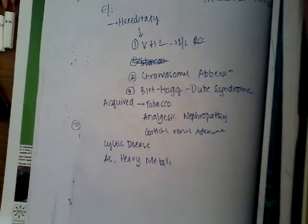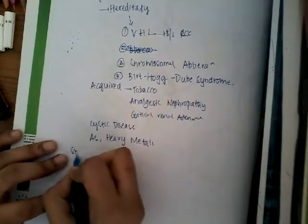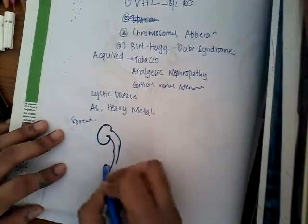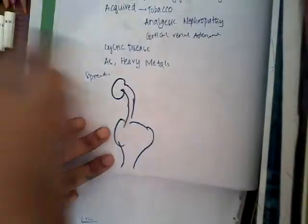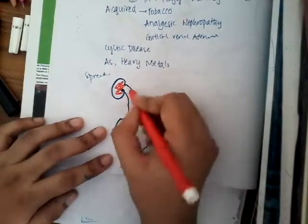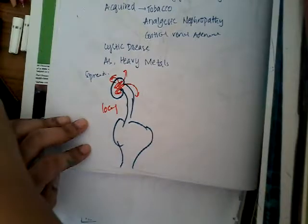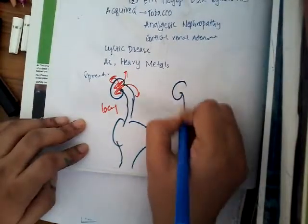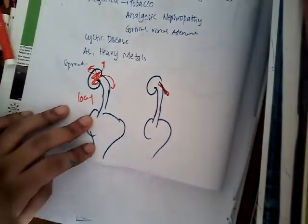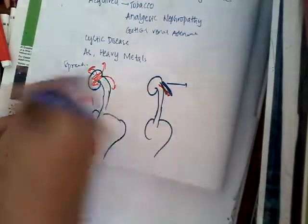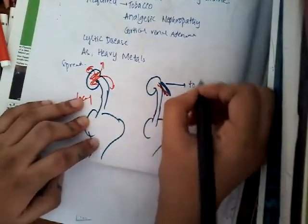Now we will see the spread of renal cell carcinoma. First, it can spread into the surrounding structures — it can spread to the ureter and to the perinephric tissue and perinephric fat. That is the local spread. It can also spread through the bloodborne route, most commonly through the vein to the inferior vena cava.